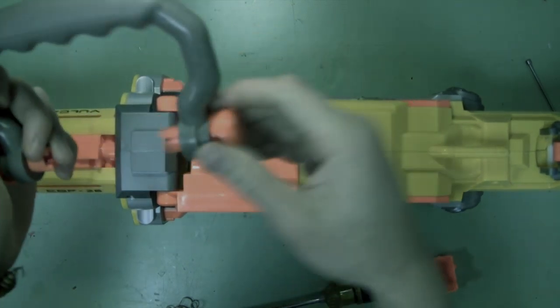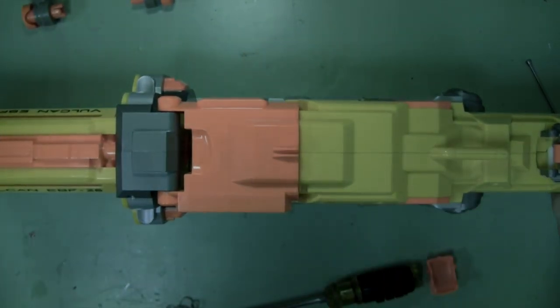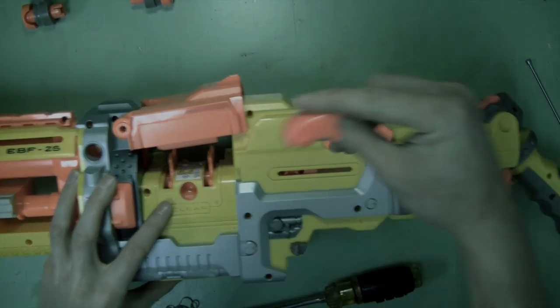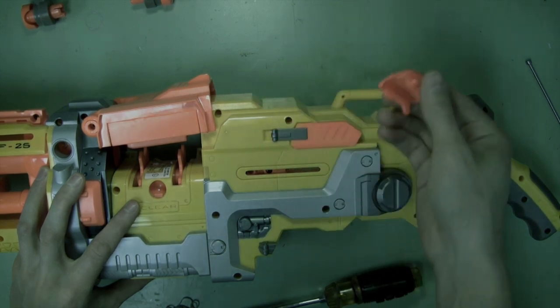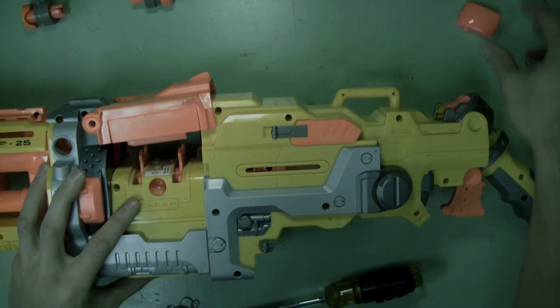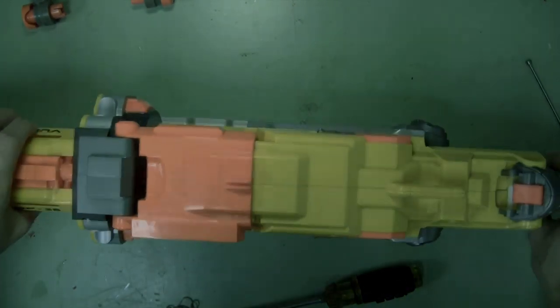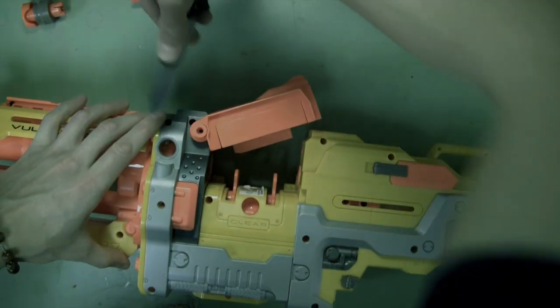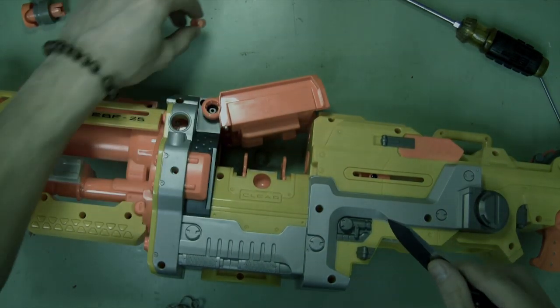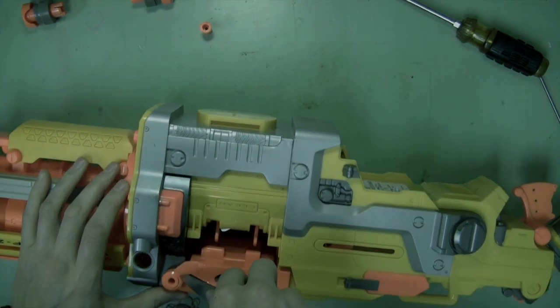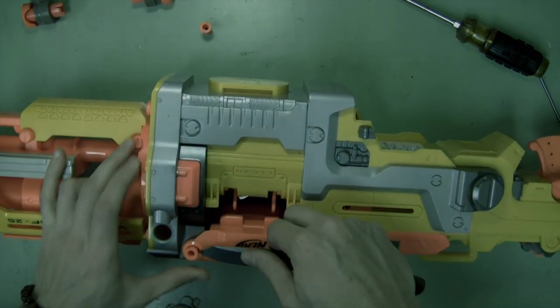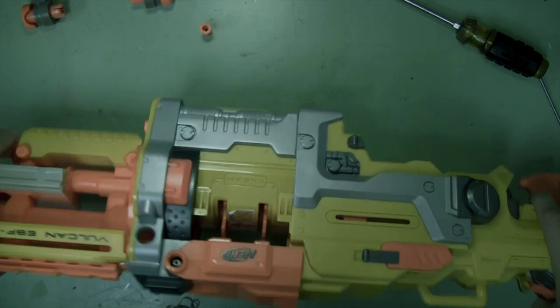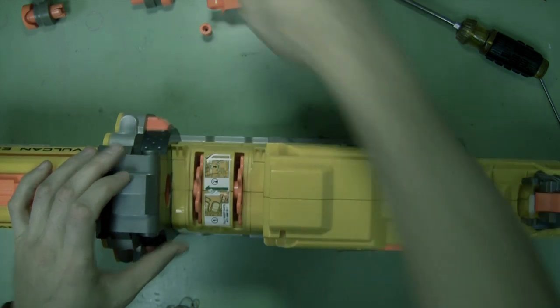And be sure not to lose these tabs. Keep track of the power switch door because it will come free once you remove the screws. Next, remove the belt retainer. More pins.